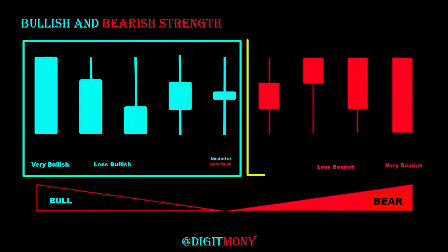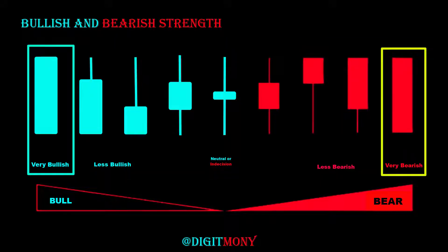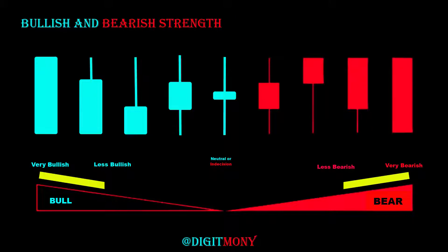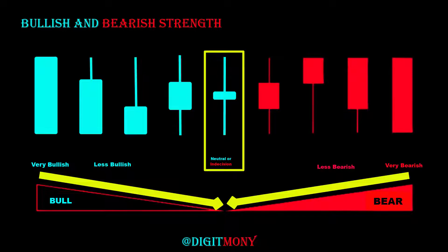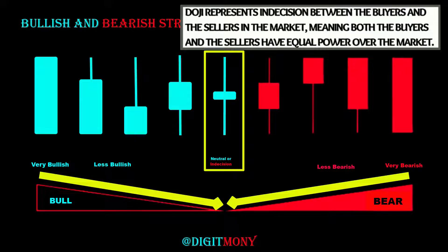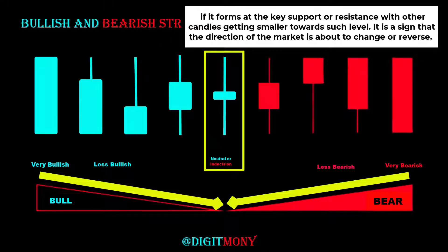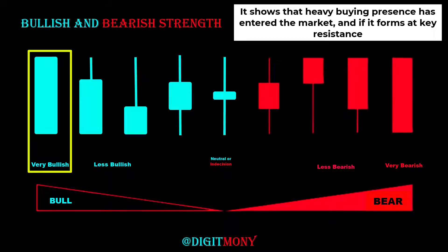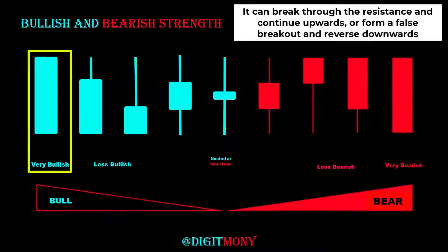On the left are bullish and on the right are bearish. The ones at both ends with a big body and no wick show heavy bullish or bearish dominance in the market respectively, decreasing in strength until they get to the center. The doji candle at the center — with a small body and long wick — represents indecision between buyers and sellers, meaning both have equal power. If it forms at key support or resistance with other candles getting smaller towards that level, it is a sign the market direction is about to change. If a bullish momentum candle forms at key support, it shows heavy buying presence; at key resistance, it can break through or form a false breakout and reverse downwards.